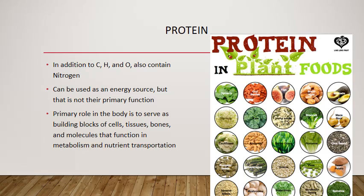To summarize the macronutrients: carbohydrates are mostly a fuel source. Fats are a fuel source and serve a very important structural function in the body. Proteins are not primarily a fuel source — although we can use them if necessary — but we really need proteins to build our bodies well.